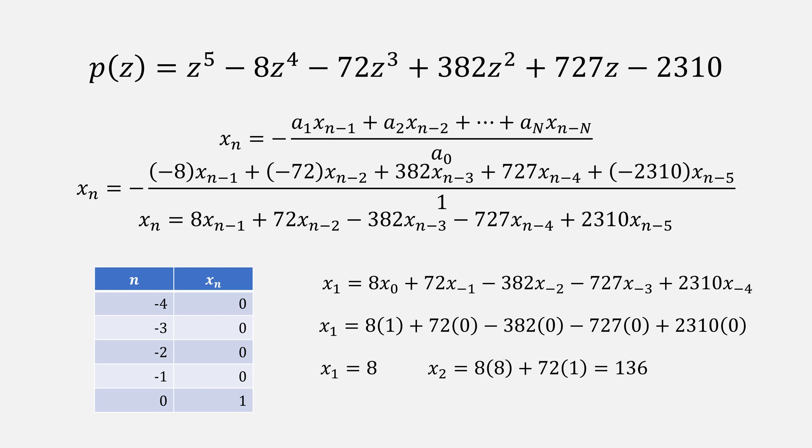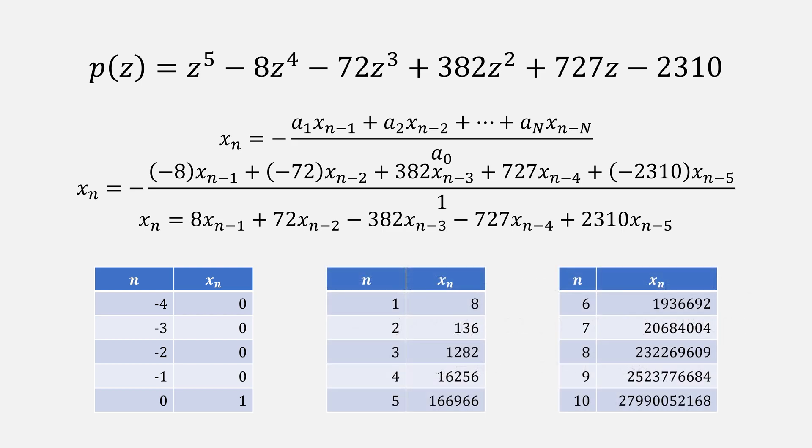This simplifies just to be the value of 8. Our value for x sub 2 would just be 8 times 8 plus 72 times 1, giving 136. If we continue our series finding, we get these numbers.